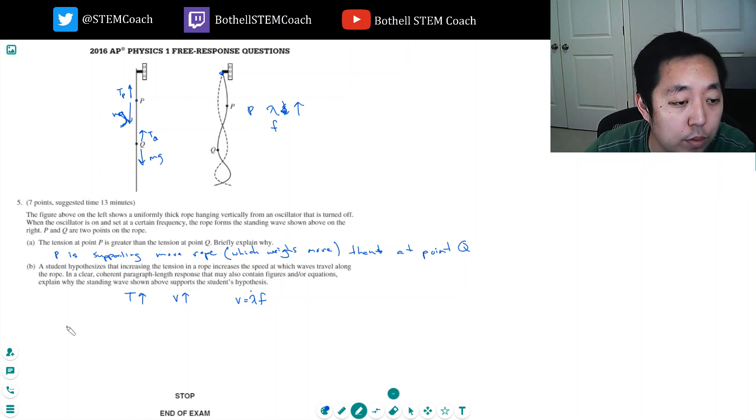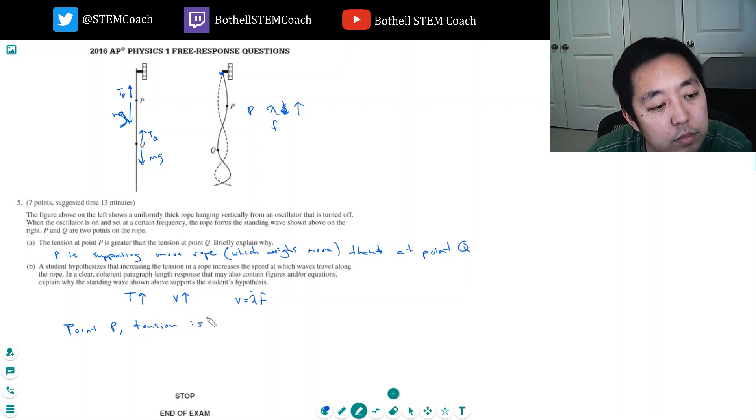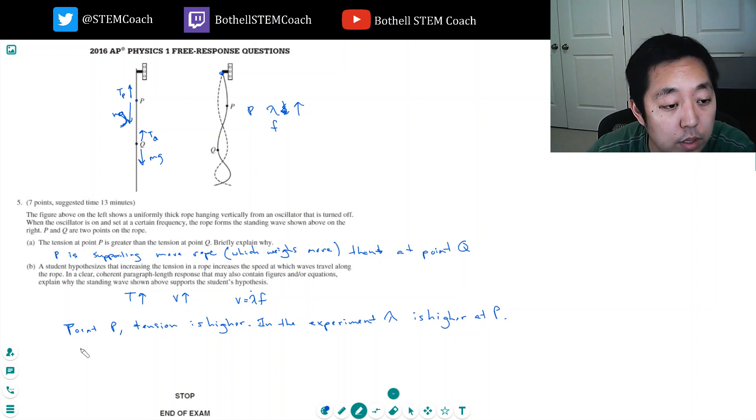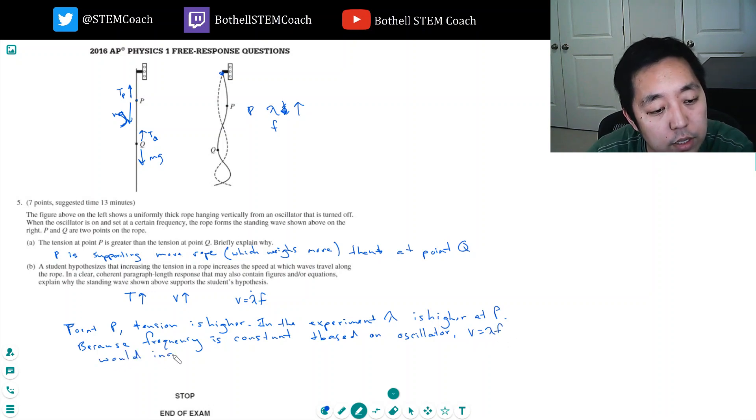And also the tensions. So what are we saying? At point P, tension is higher. In the experiment, the wavelength is higher too. Because frequency is constant and based on the oscillator, in the experiment, V equals lambda F would indicate V has increased. So V has increased.